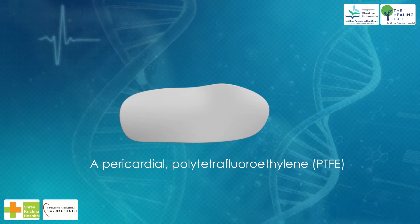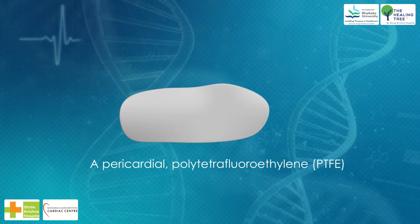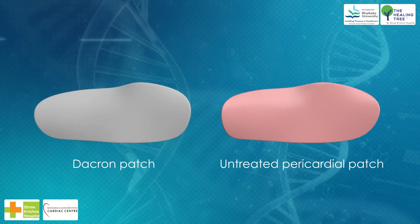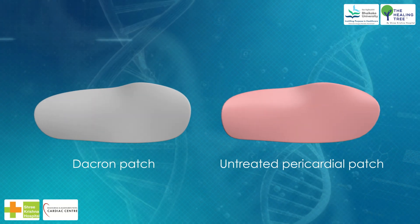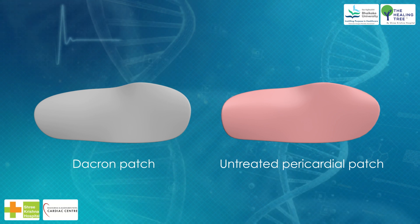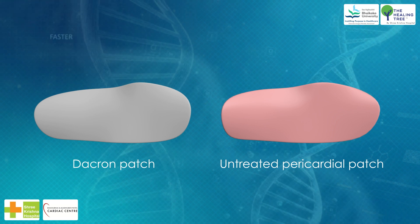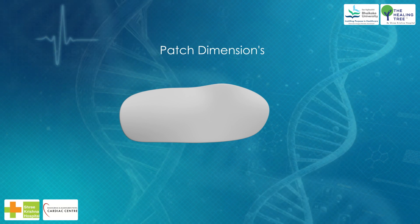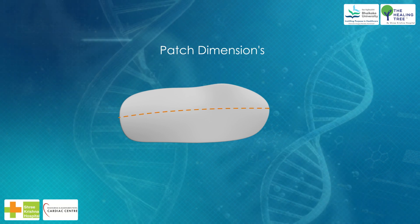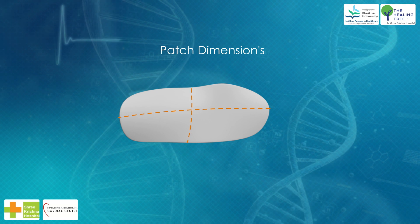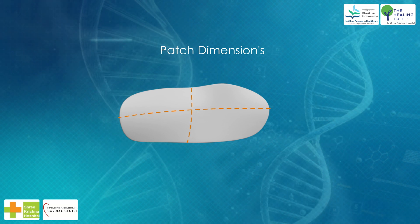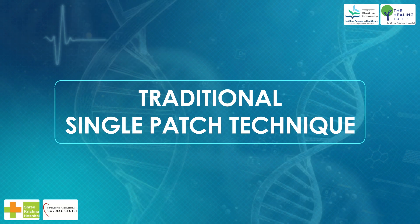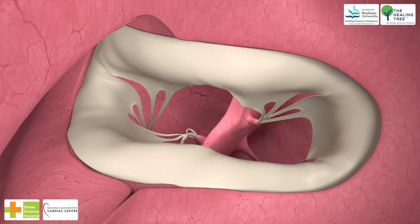For the single patch technique, a pericardial, polytetrafluoroethylene (PTFE), or Dacron patch can be used. Untreated pericardial patches carry a risk of aneurysm development at the ventricular level; the Dacron patch carries a risk of postoperative hemolysis should a jet of mitral or tricuspid valve insufficiency strike it. Patch dimensions are determined by: (A) size and shape of the VSD, (B) distance between the anterior and posterior margins of the AV valve annulus, and (C) dimensions of the atrial septal defect.